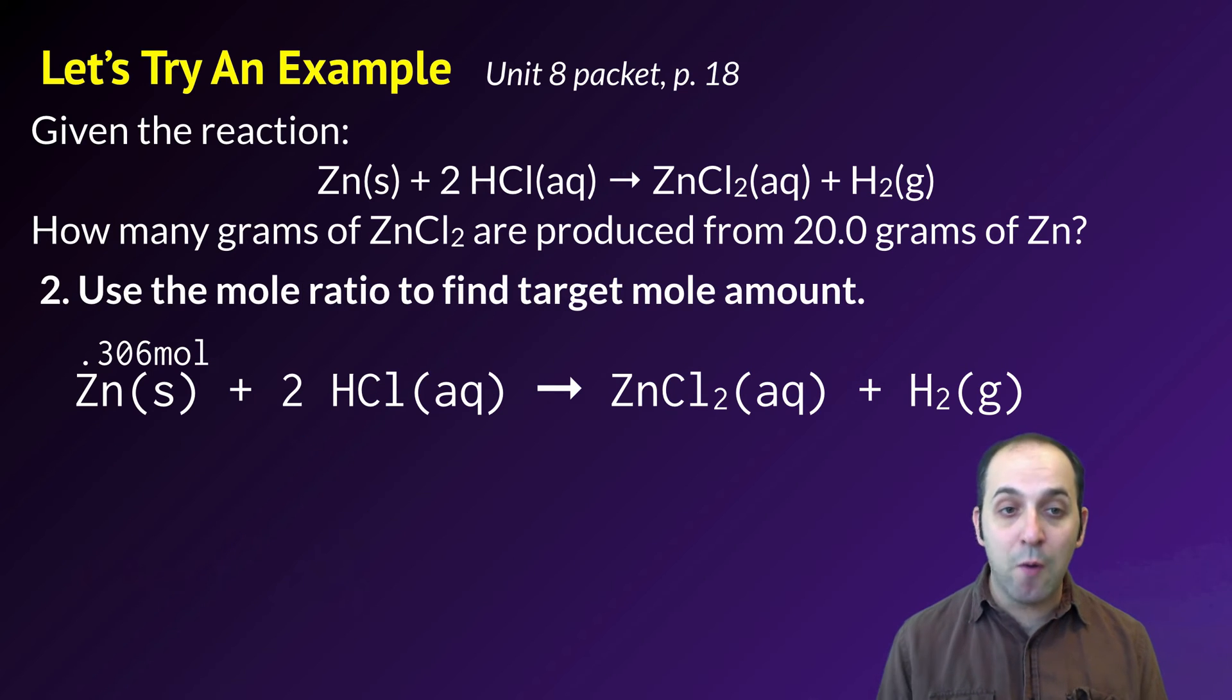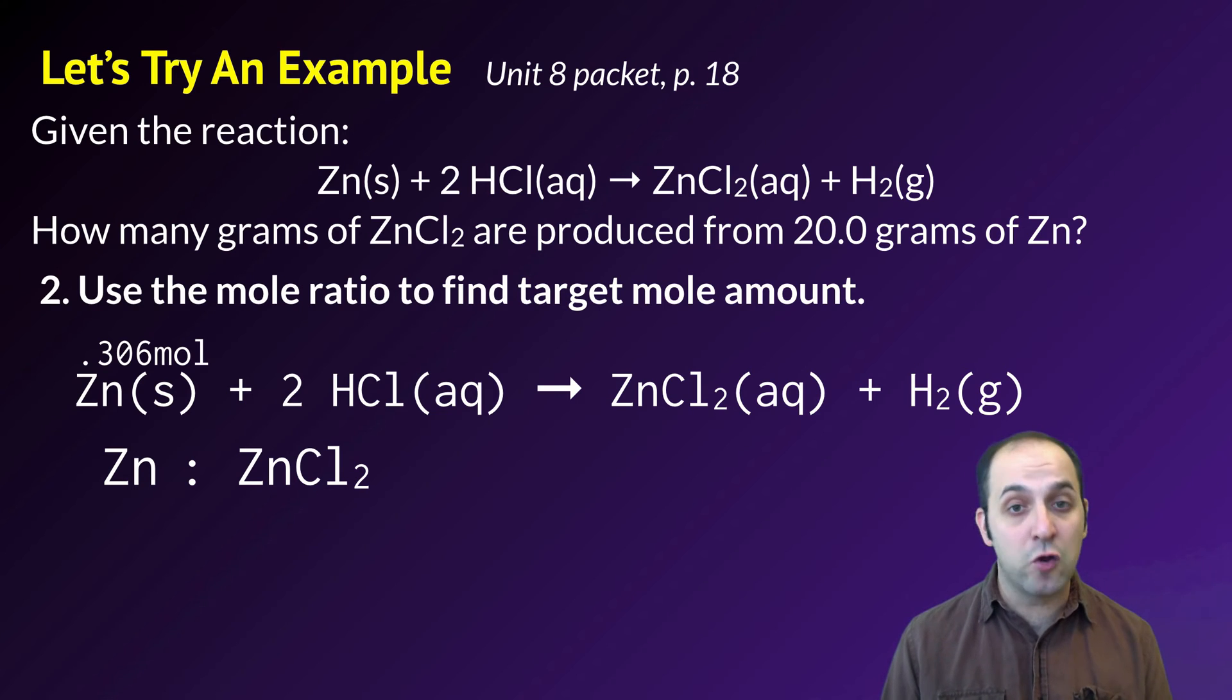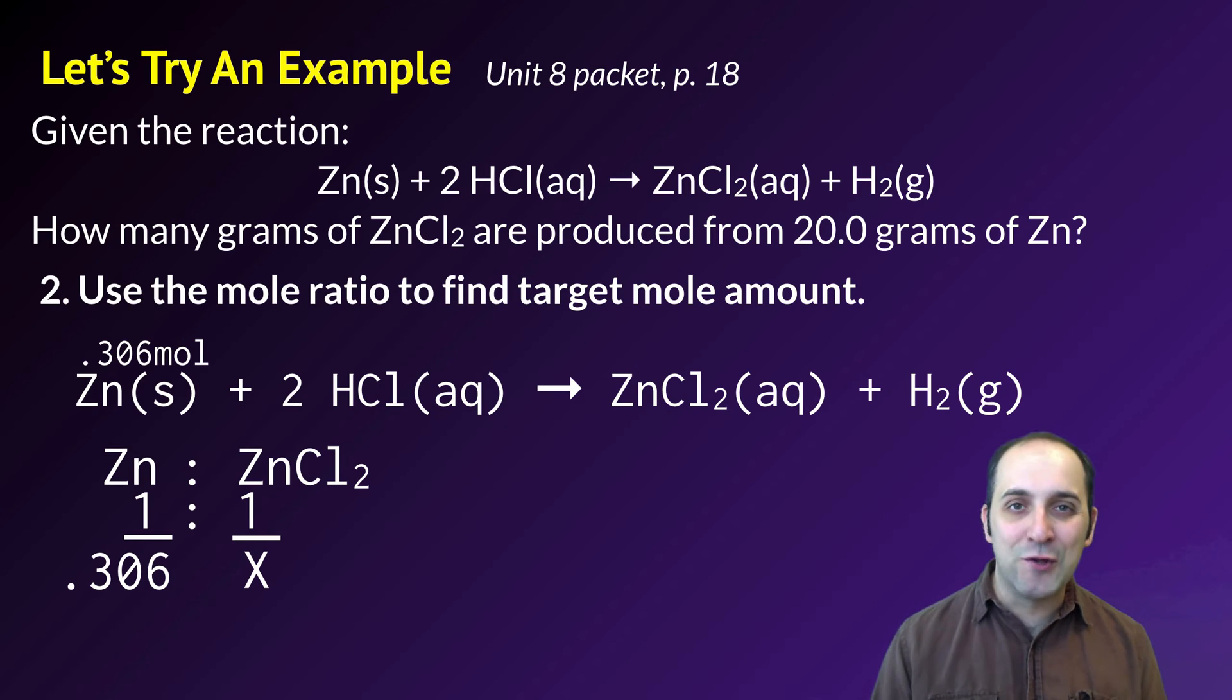Step two requires me to use that mole ratio to find the target mole amount. So in order to do that, I need to look at the mole ratio between zinc and zinc chloride, which is what I'm looking for. They're in a one-to-one relationship. I'm starting with 0.306 moles of zinc. That'll produce x moles of zinc chloride. Cross multiplying and dividing is going to tell me that it's 0.306 moles of zinc chloride produced.